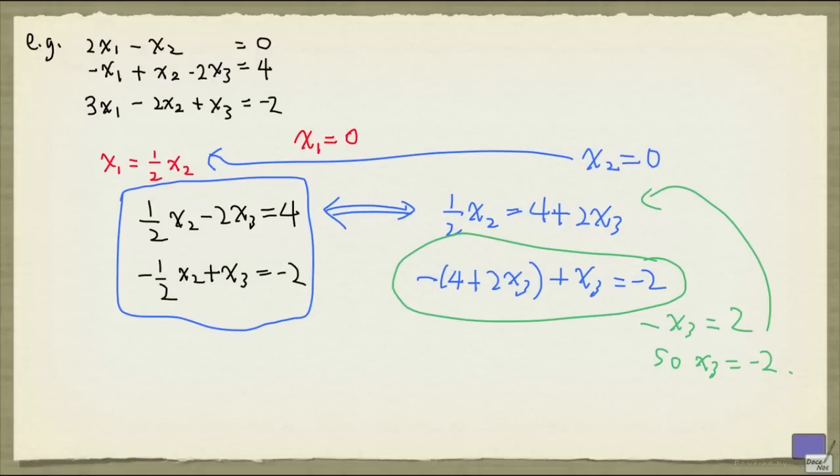So there you go. I have solved the system. So the only solution is going to be x1, x2, x3 equal to 0, 0, and minus 2.